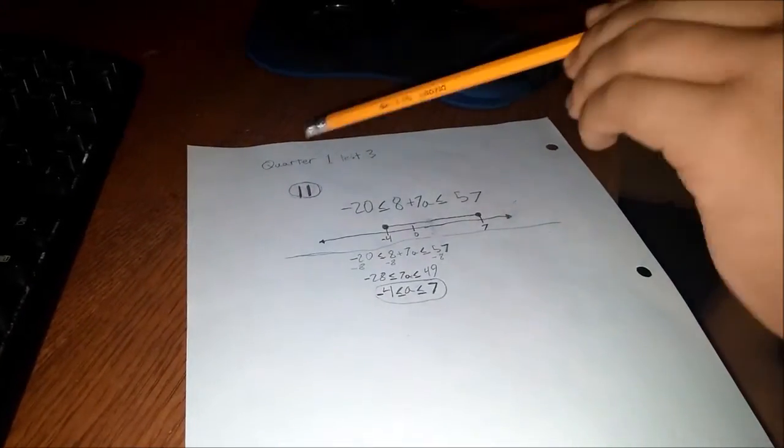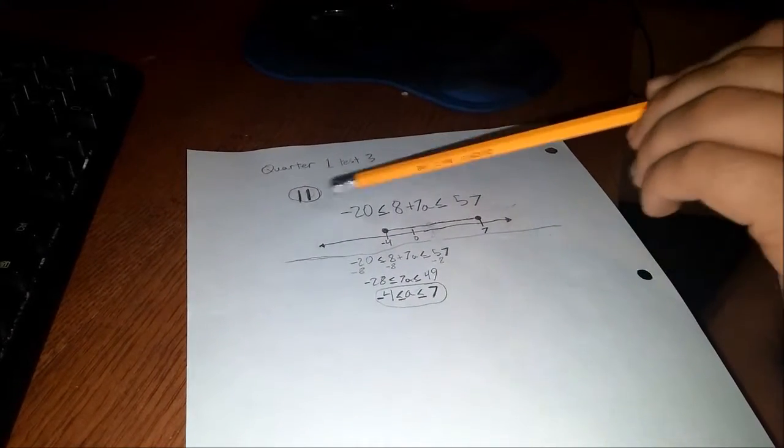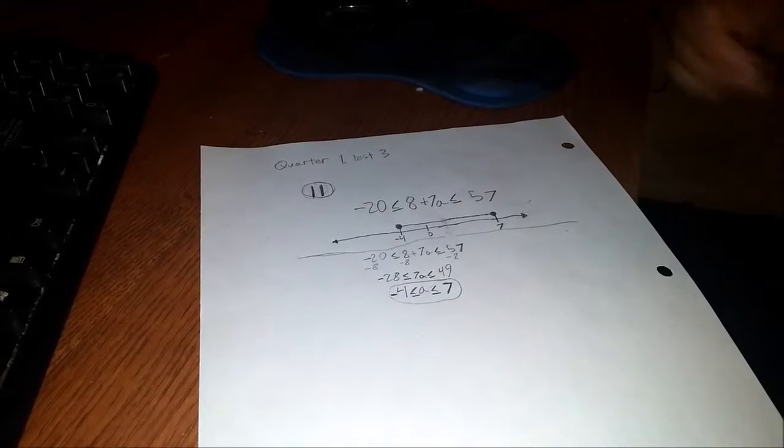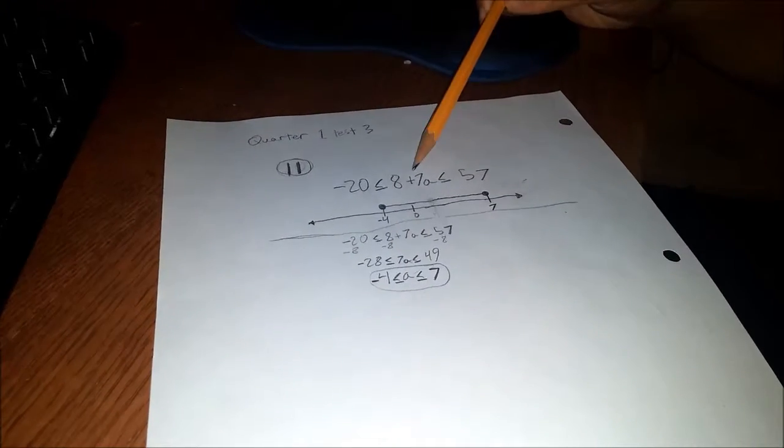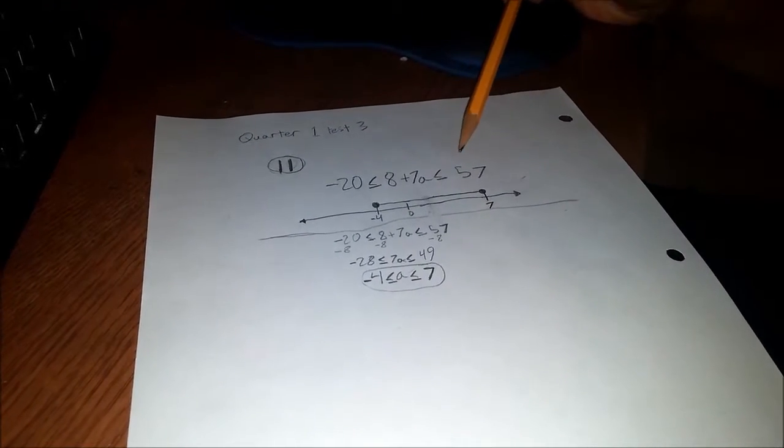Me and my partner are doing Quarter 1, Test 3, Question 11. The question is -20 is less than or equal to A plus 7A, which is less than or equal to 57.